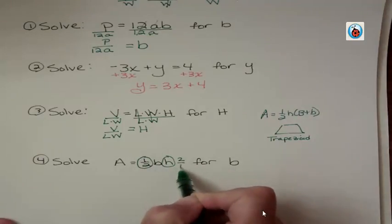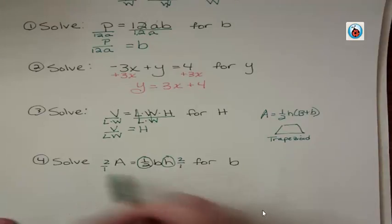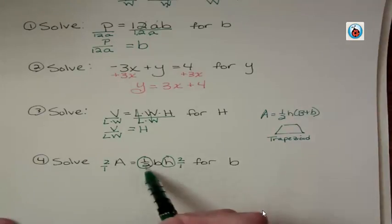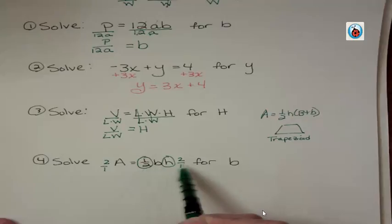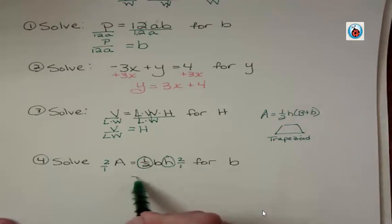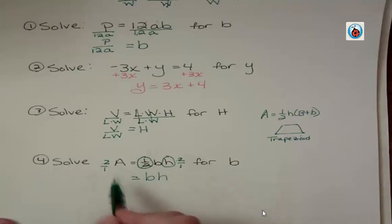That is 2 over 1. And that I'm going to have to do to the other side as well. Do you see that half of 2, 1 half times 2, would just be 1? So those things would cancel each other out nicely. And I'd have BH. And over here I have 2A.